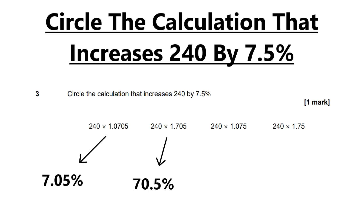Next up, we've got 240 times 1.075. Using the method I listed before, you can try it yourself if you want to pause the video. The answer is going to be 7.5% — so this is our correct answer. And the last one is a 75% increase — you can pause and have an attempt at that one too if you'd like.